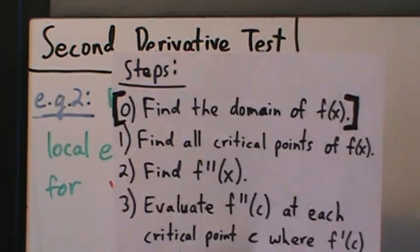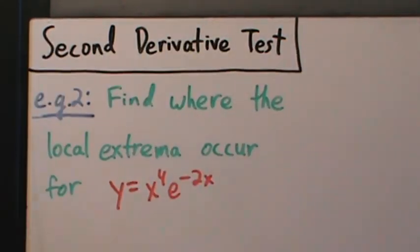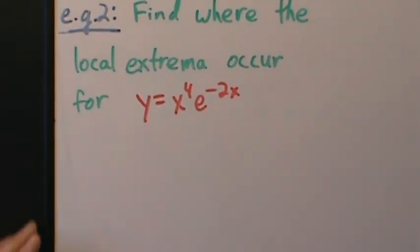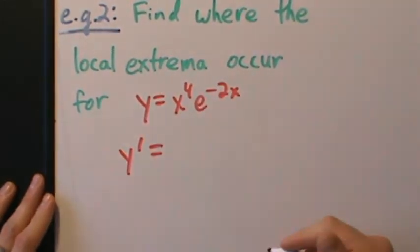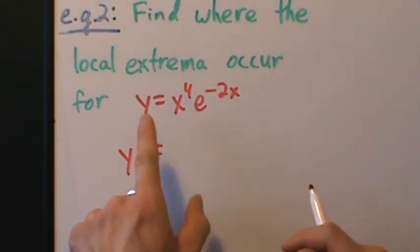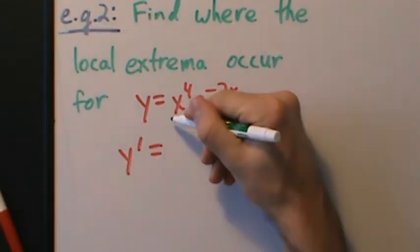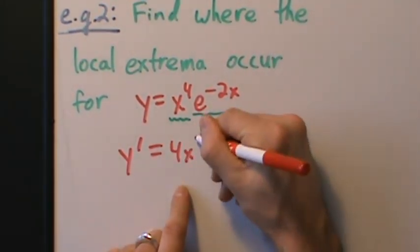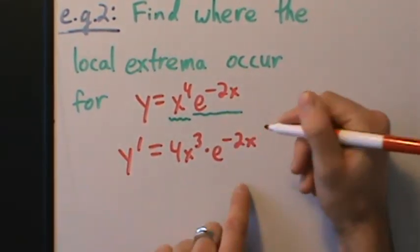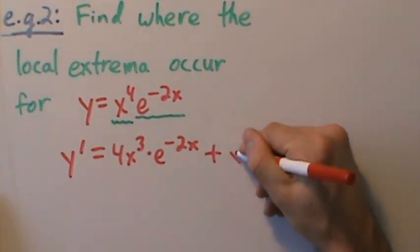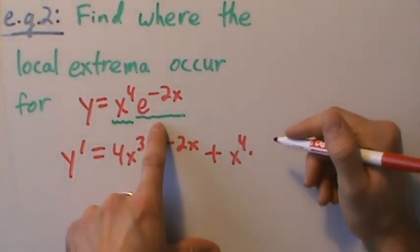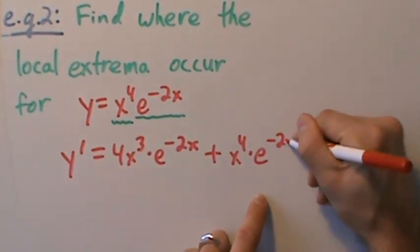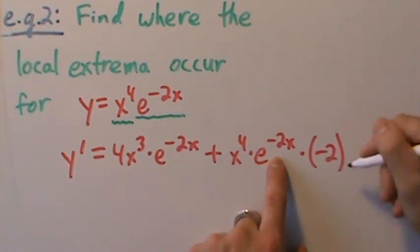Step one: find all the critical points of f of x. We did this when we went through the same example for the first derivative test, but we'll go through it again. This is a product rule — derivative of the first times the second, plus the first times derivative of the second. So the derivative of the first, x to the fourth, is 4x cubed times e to the negative 2x, plus x to the fourth times the derivative of e to the negative 2x, which by chain rule is e to the negative 2x times negative 2.